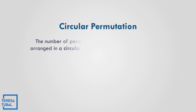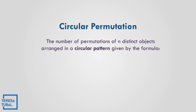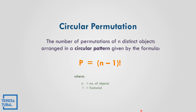For circular permutations, when n distinct objects are arranged in a circular pattern, the formula is P equals (n minus 1) factorial, where n is the number of objects.